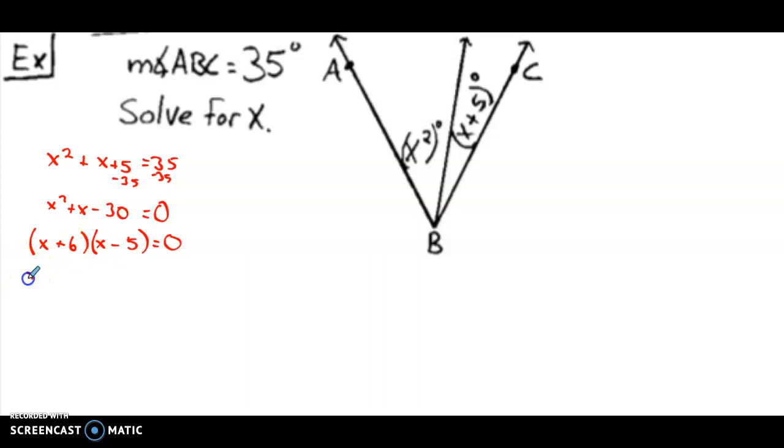Then we set each of our factors equal to 0. Solve for each one. x equals negative 6. Over here, x could be 5. So as of right now, we have two answers.